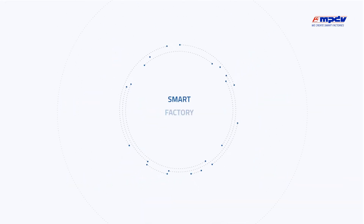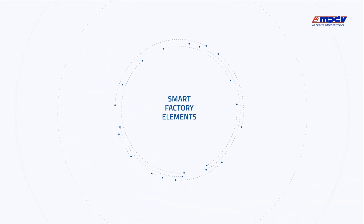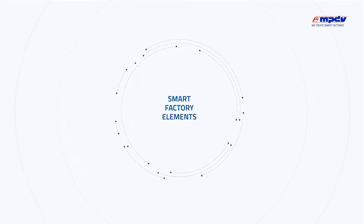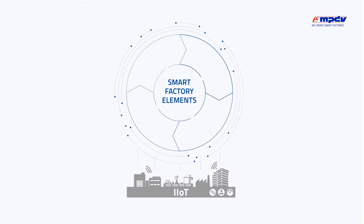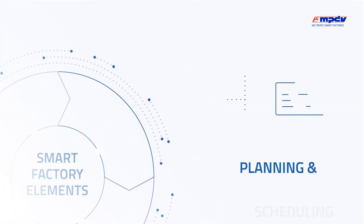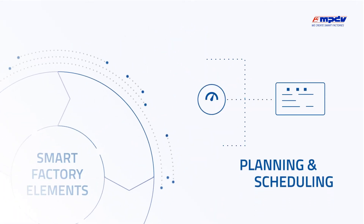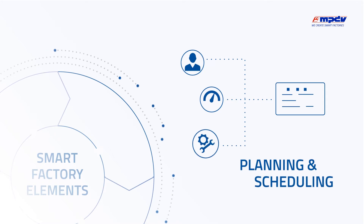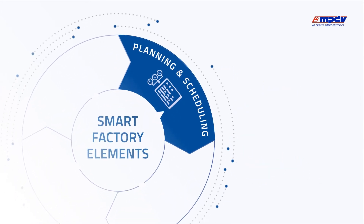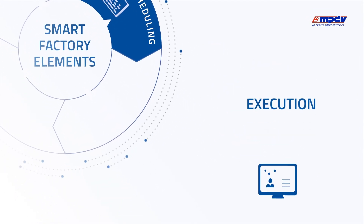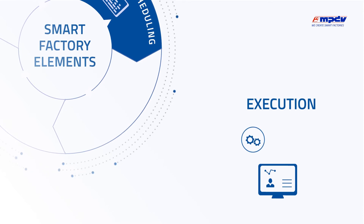Our model Smart Factory Elements supports you in realizing your vision of a Smart Factory. The requirements are formulated using five elements. Your production can be planned with regard to time, resources and maintenance. Specifications are integrated and documented correctly and efficiently.